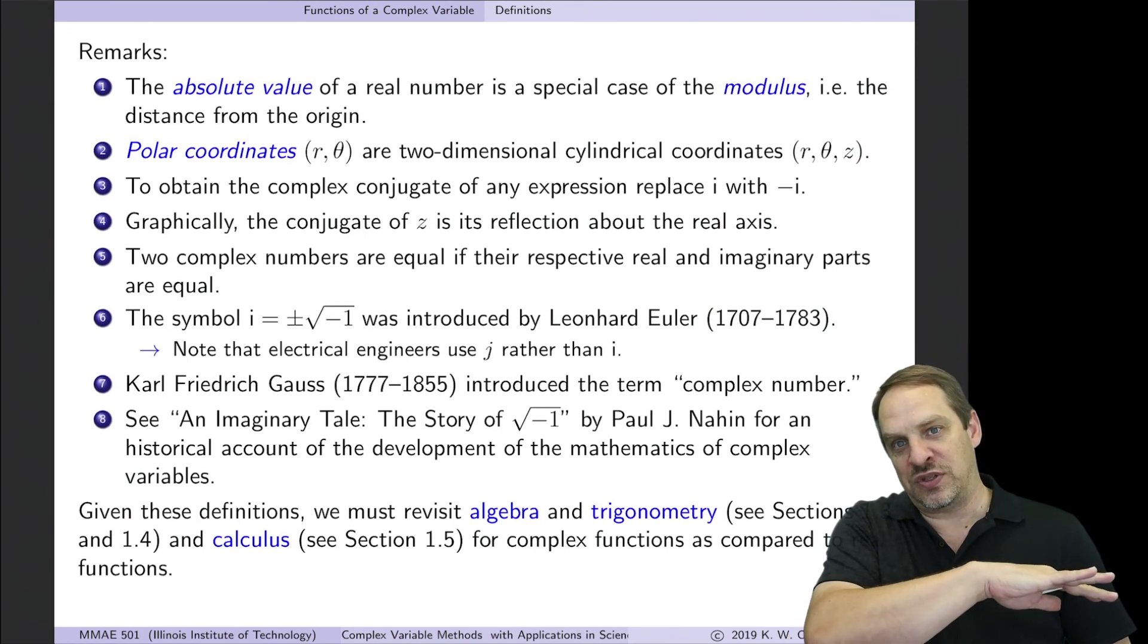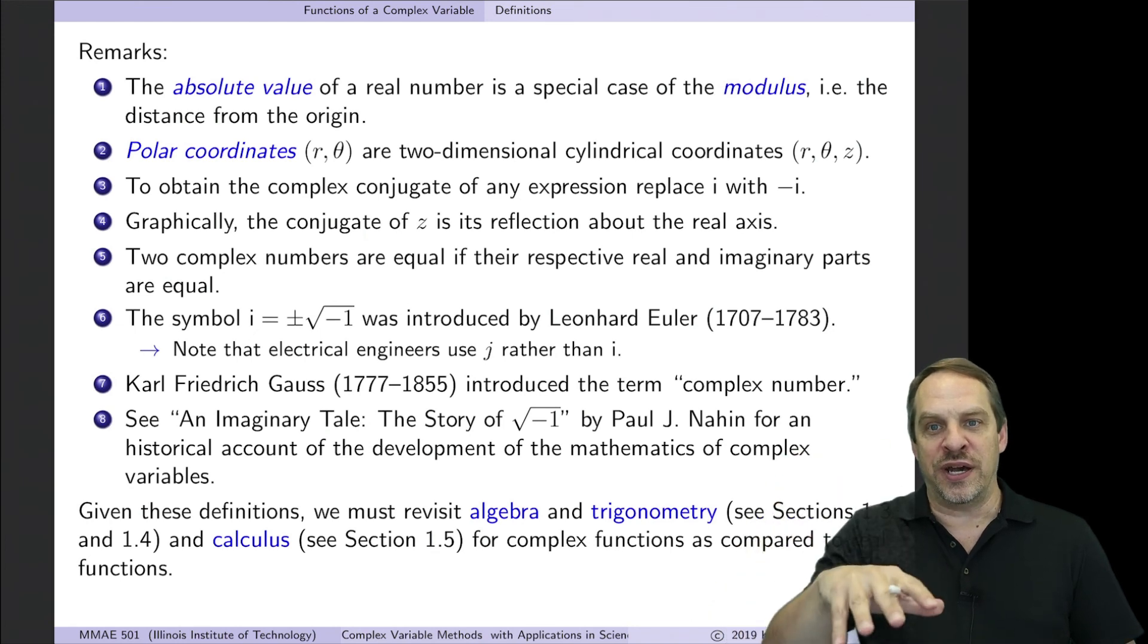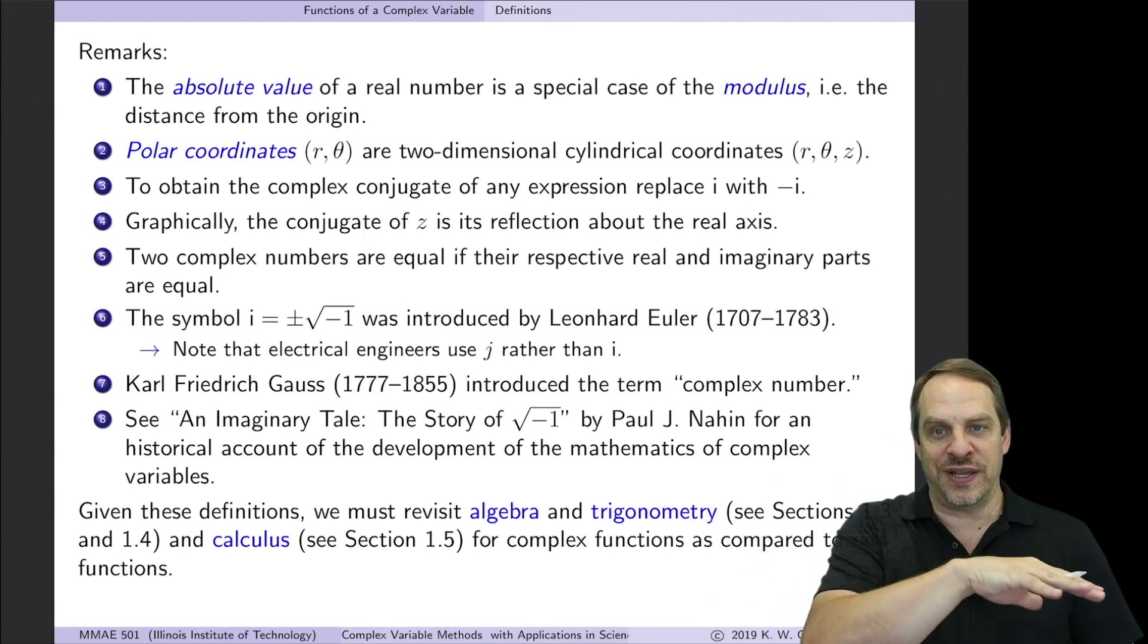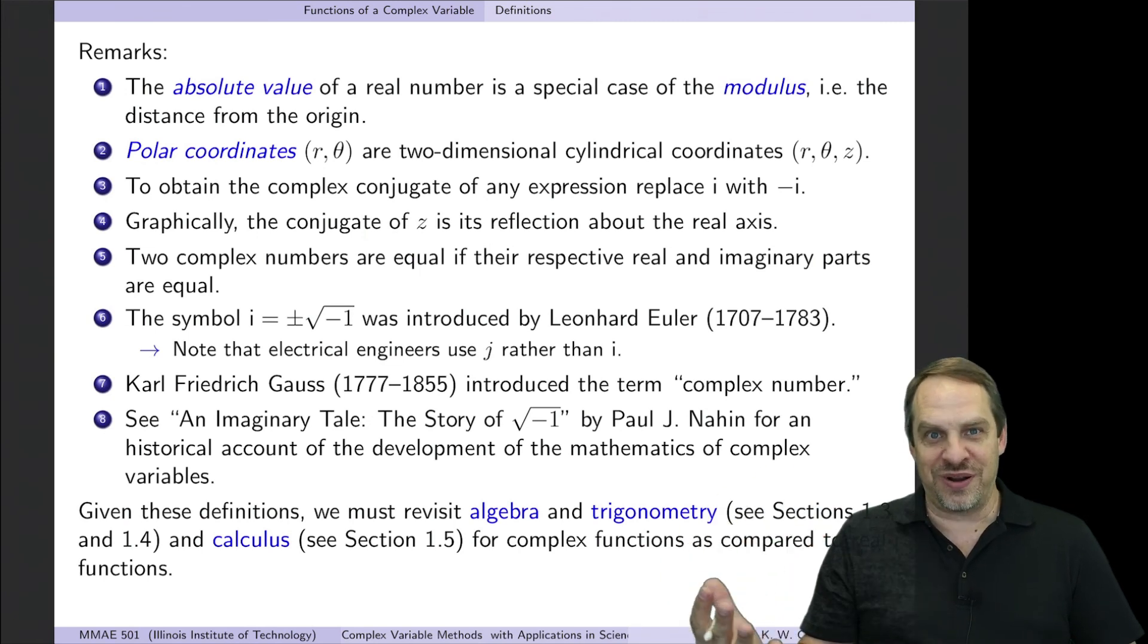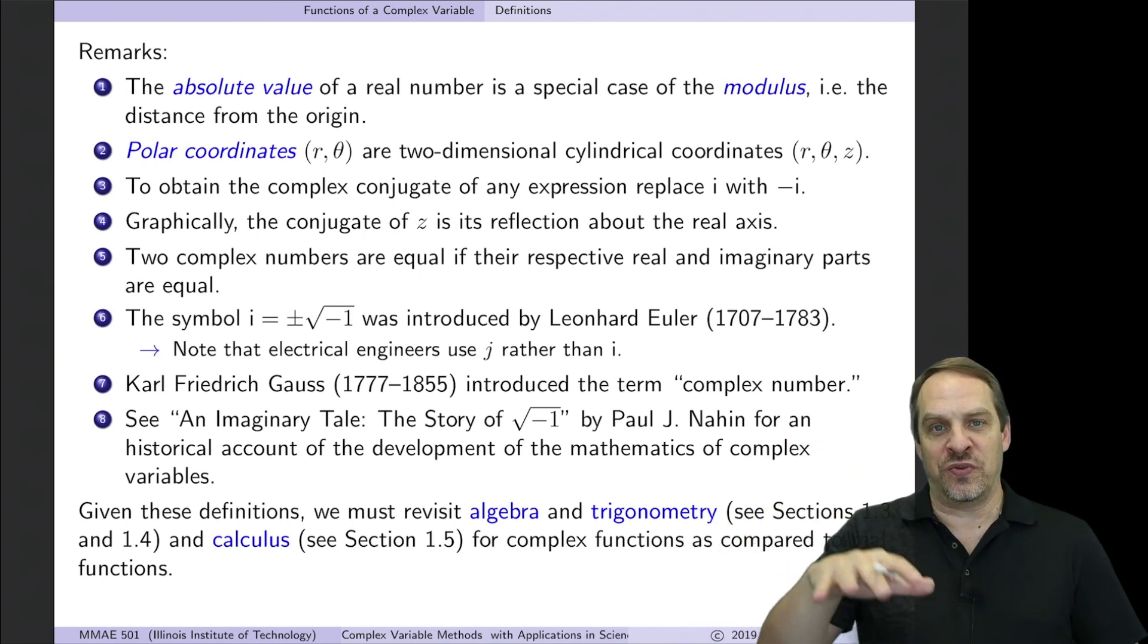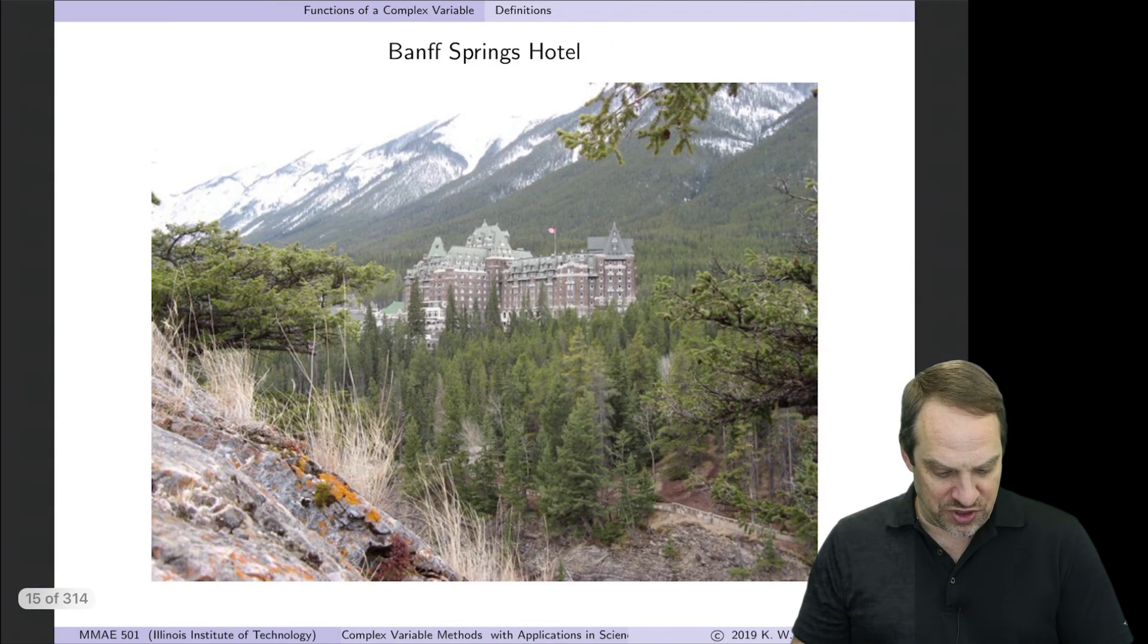So what we're going to do in the next several sections is we're going to have to basically rewind all the way back to grade school and redo arithmetic, algebra, trigonometry, and calculus in order to see how they're the same, hopefully the more the better, how they're the same and different from what we learned for real numbers, variables, and functions. So that's what we're going to do.